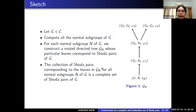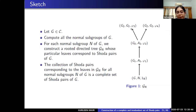For this class, here is a brief sketch of how the Shoda pairs are constructed. Choose a group G in class C and compute all its normal subgroups. Then for each normal subgroup, construct a rooted directed tree whose certain leaves will correspond to the Shoda pairs of G. Collect the Shoda pairs corresponding to the leaves in G_N for all normal subgroups of G, and that will turn out to be a complete set of Shoda pairs of G. Some natural questions arise: what are the vertices? What are the edges? Which leaves correspond to the Shoda pairs of G, and how to determine those leaves?